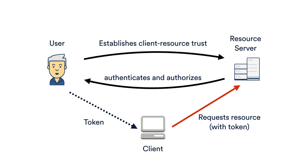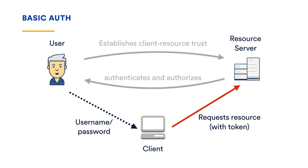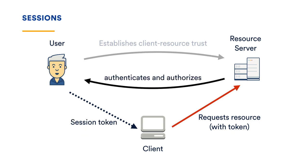So let's make this more concrete and talk through how it applies to various API auth methods. First, let's start with basic auth. Here, the token itself is just the username and password from the user, so there's no actual explicit client-resource trust because there's no way for the resource server to distinguish between different clients or even between the client and the user itself. The next level of sophistication is session-based auth, like the legacy JIRA sessions API. Here, the user authenticates and is authorized against the resource server directly and passes the session token to the client, but again there's no explicit client-resource trust.